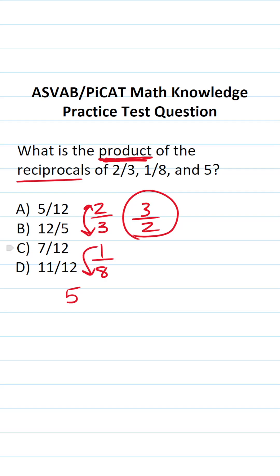To find the reciprocal of one-eighth, we're just going to exchange our numerator and denominator. So its reciprocal is going to be eight over one, and I'm going to circle it.